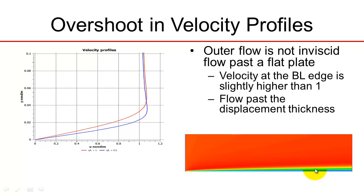Boundary layer theory splits the flow into an inner flow and an outer flow. The inner flow is where the boundary layer equations are valid. In the outer flow, boundary layer theory assumes that the boundary layer is very thin, so it's just the flow past a flat plate.